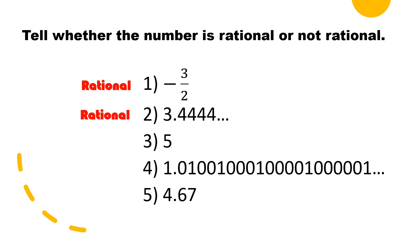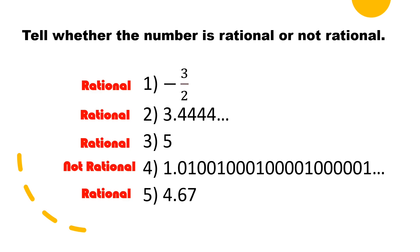Number three is an integer — rational. Number four is a non-terminating decimal — not rational. Number five: 4.67 is a terminating decimal — rational.